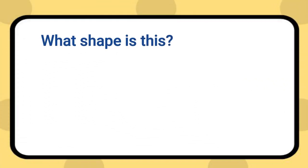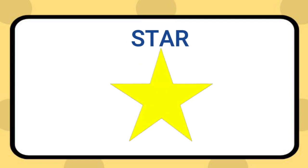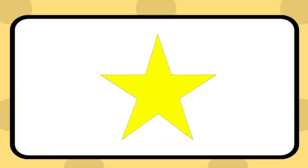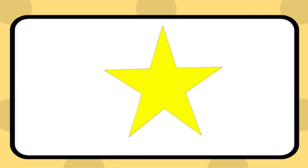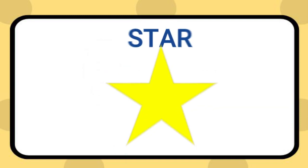What shape is this? This is a star. A star is a shape with five points: one, two, three, four, and five. Star.